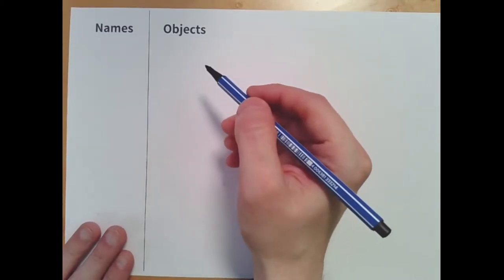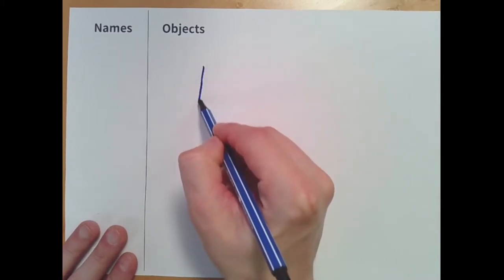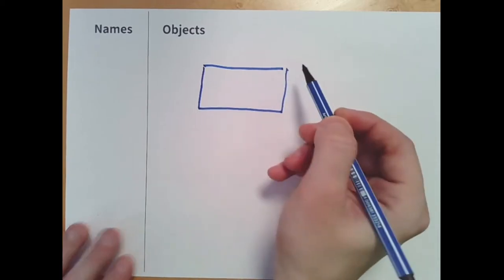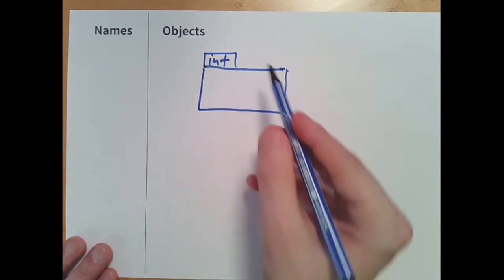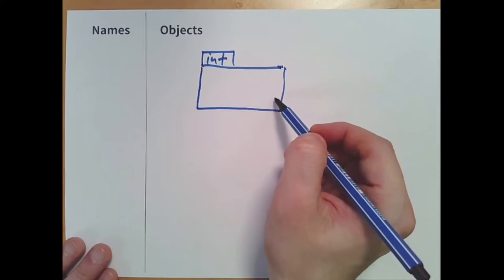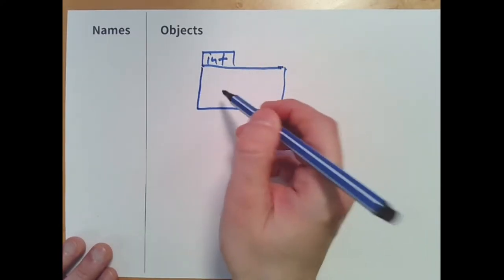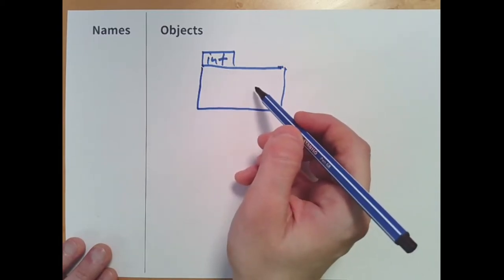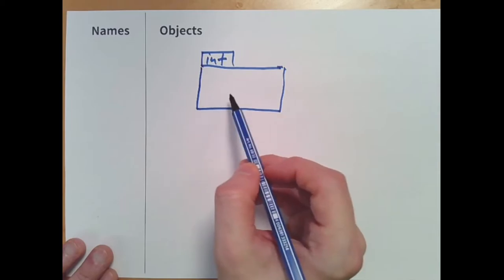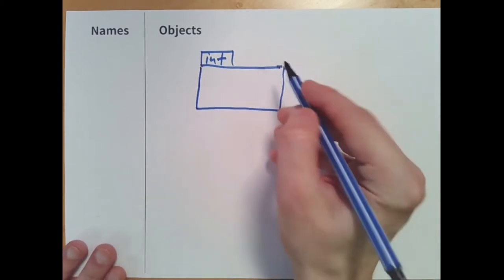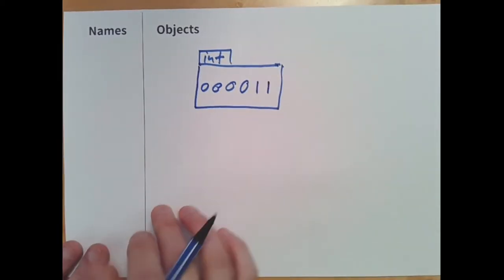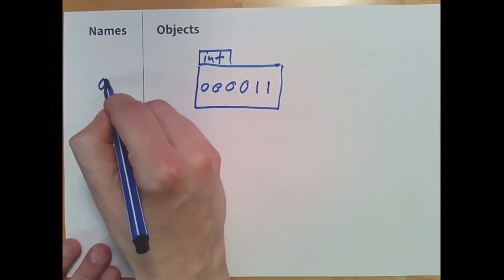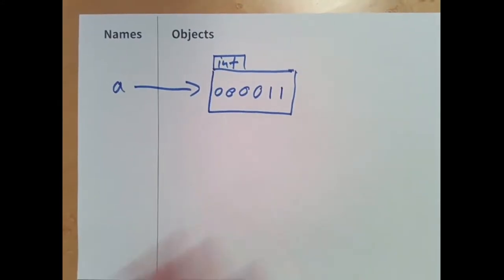Let's look at the memory diagram. If you create the number 3, Python would go ahead and create a box — an object — put a type on it, and then write some zeros and ones in there. Let's get more formal and understand what those numbers look like. For the number 3, the bits would look like two ones followed by many leading zeros. If we store that as variable a, that's what the memory diagram would look like.